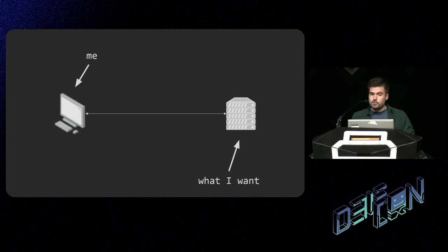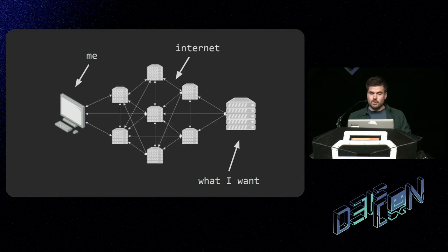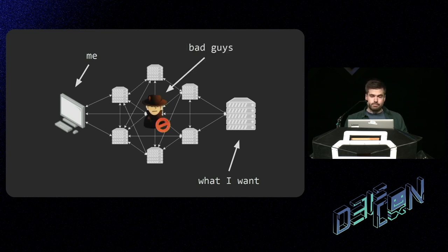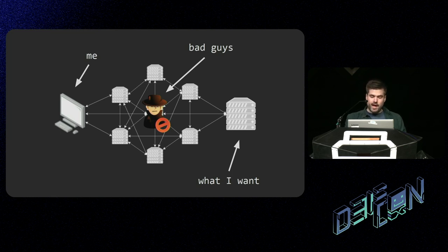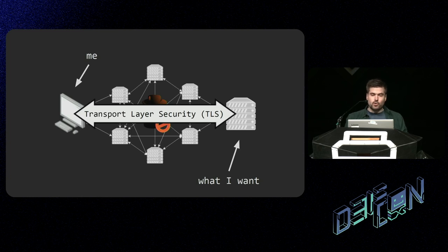Let's dive directly into TLS. When you use computers, there's something that you want — some kind of server somewhere. To get it, you need to go through the internet. This internet is a big mess of computers trying to get you what you want, made up of different computers in different countries run by different people. Of course, there are bad guys who might intercept your connections and listen in. For this, we have TLS — Transport Layer Security — which secures the connection between you and what you want.